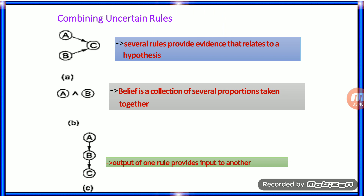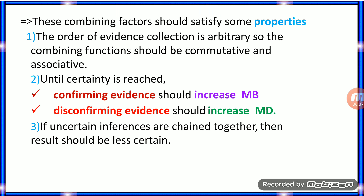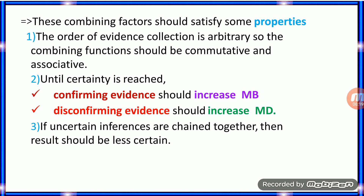The first diagram shows several rules providing evidence relating to a hypothesis. The second diagram shows belief as a collection of several propositions. The third diagram shows the output of one rule providing input to another rule. When combining these factors, some properties must be satisfied: the order of evidence collection is arbitrary; until certainty is reached, confirming evidence should increase MB; disconfirming evidence should increase MD; and if uncertain inferences are chained together, the result should be less certain.